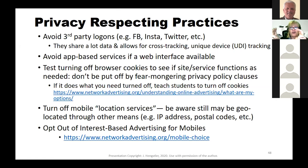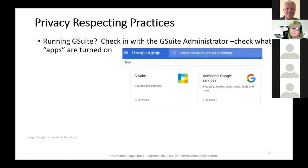If you are using browser-based services, try turning off cookies. Services use fear-mongering language in privacy policies, saying 'if you turn cookies off, it may not work' — but try it and see. If you get all the functionality you need without the cookies, that's great, and teach your students how to figure out the same thing — it's a really important digital privacy literacy skill. Turn off mobile location services, but be aware that you can be geolocated through IP addresses and postal codes. Check the Network Advertising Initiative to opt out of advertising for mobile devices. If you're running G Suite, check in with your G Suite administrator and see what apps are turned on.